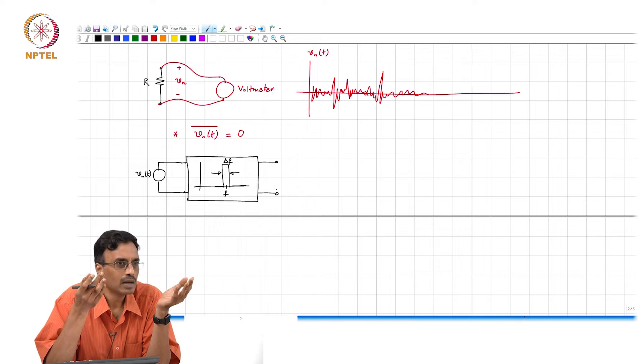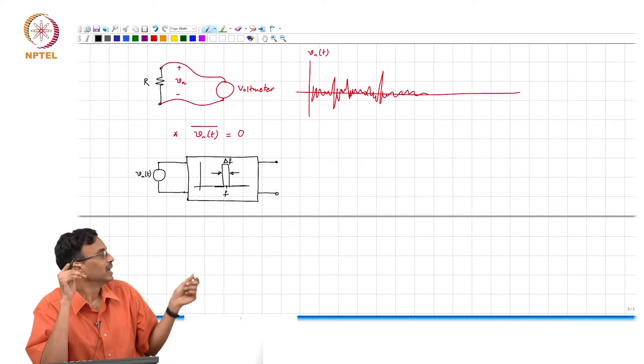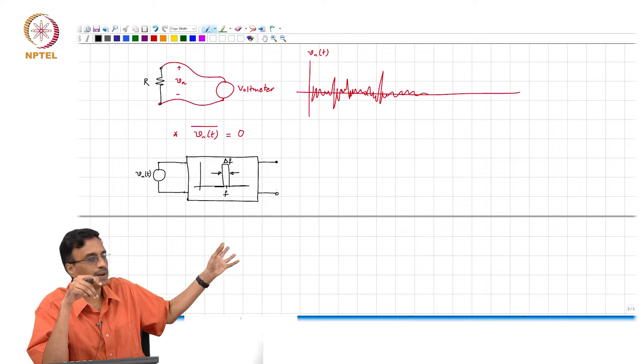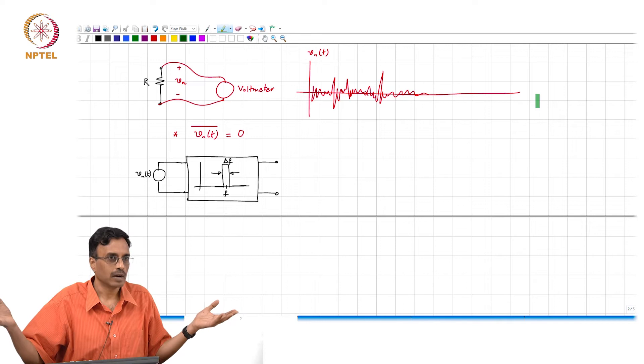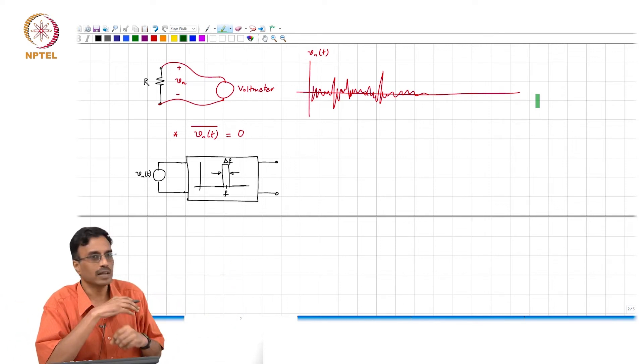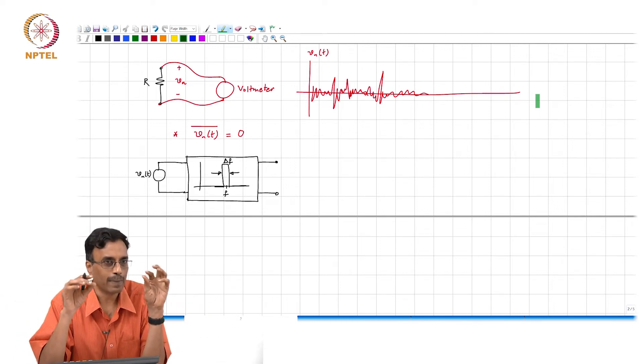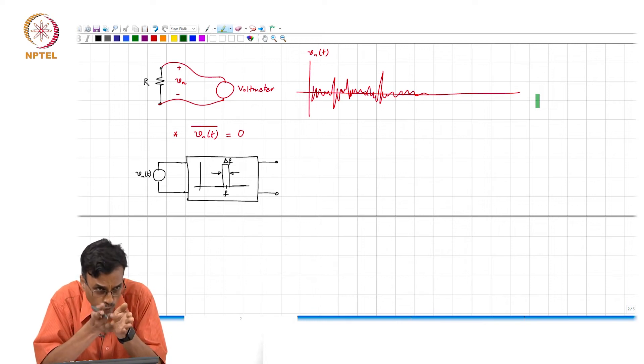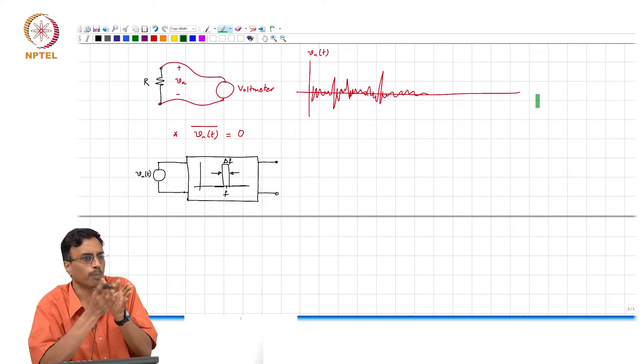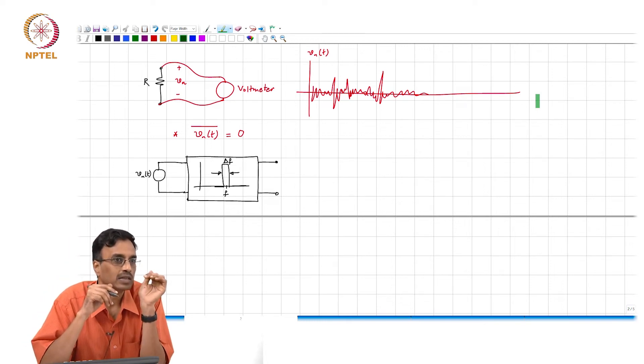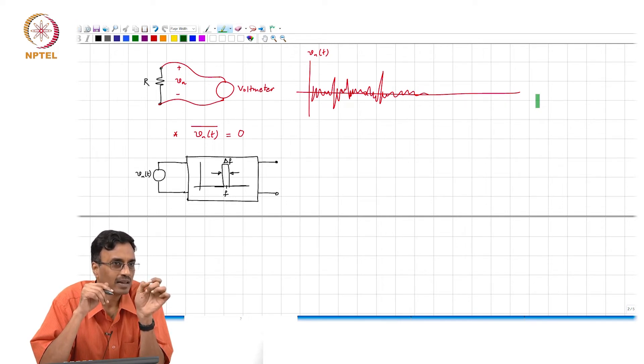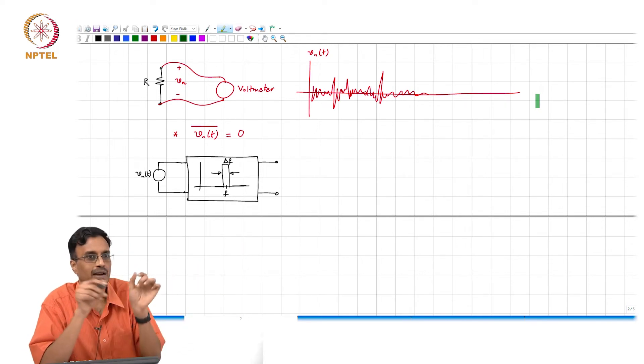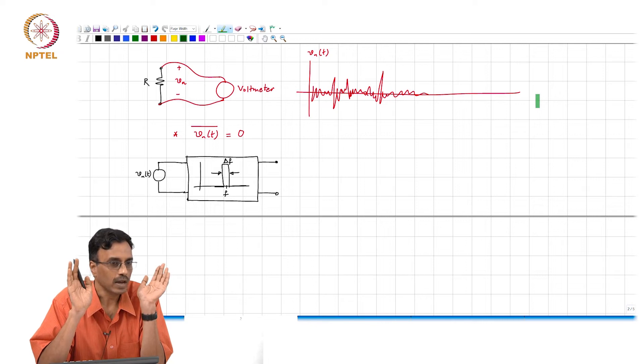What do you think the band pass filter will do? This is an ideal band pass filter, perfect brick wall with a bandwidth of delta f and centered at f. What will the band pass filter do? It will remove all frequency, I mean this is a random waveform, this is some waveform. So evidently it has some spectrum, correct. You take this waveform and then pass this through a band pass filter. The band pass filter is only going to pick up those components which are centered at f and in a neighborhood of delta f around f.